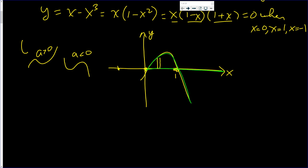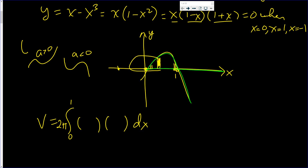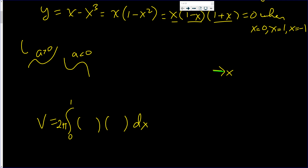When you do the shell method, you go parallel to what you're revolving about, and the disk method is perpendicular. So the volume is going to be an integral, and when it comes to these slabs, they go from zero all the way up to one.